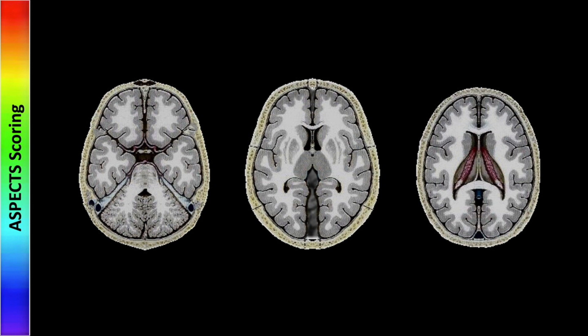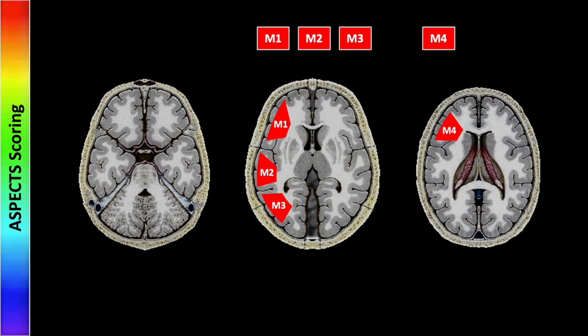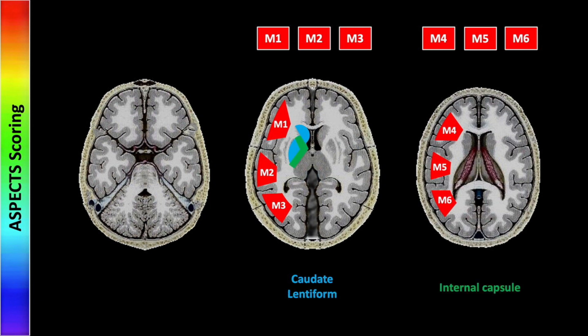The concept is simple. We have divided the brain into 10 sections, each of which scores 1 point for being normal. We have 6 cortical regions, plus 4 involving the caudate head, internal capsule, lentiform nucleus, and the insular cortex. Those all together add up to the 10 points, and any region that is normal in appearance scores 1 point.